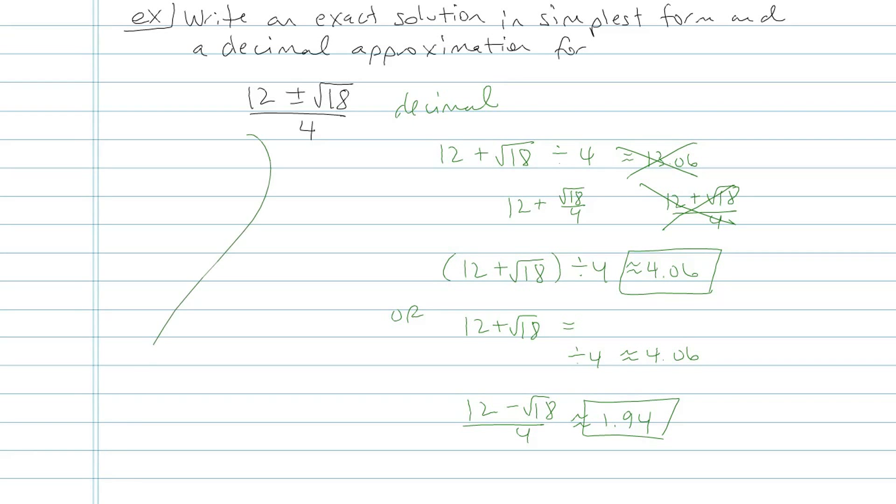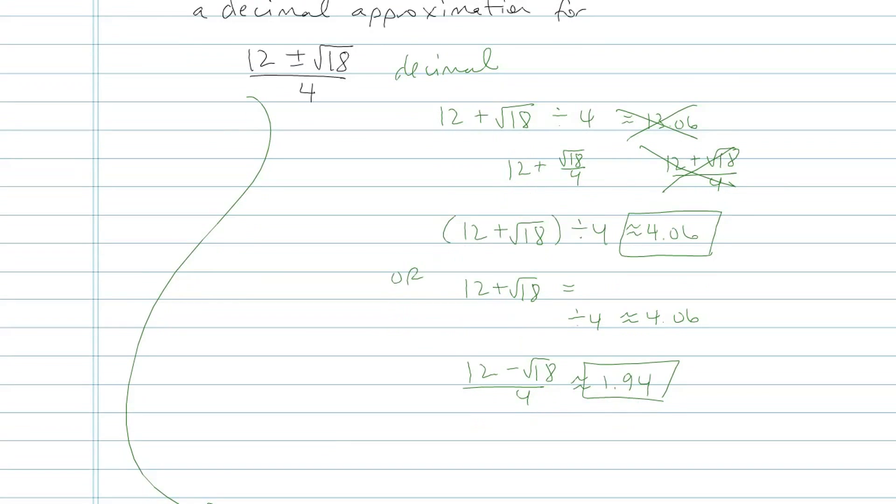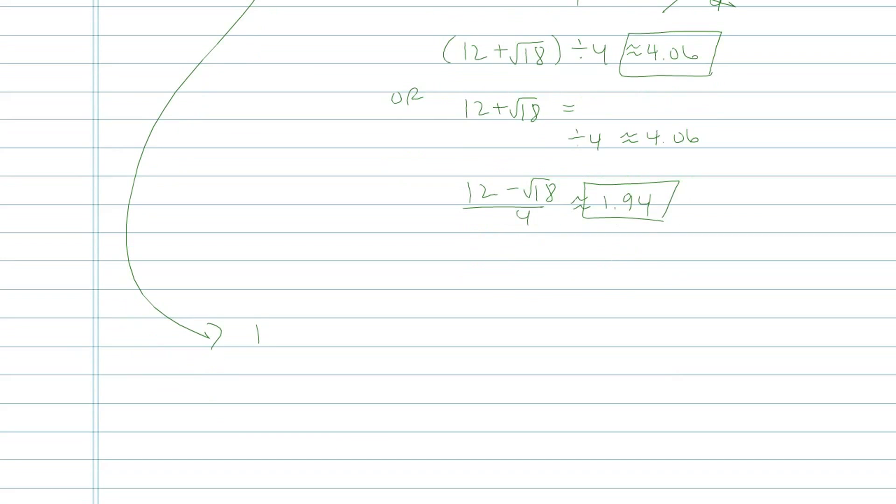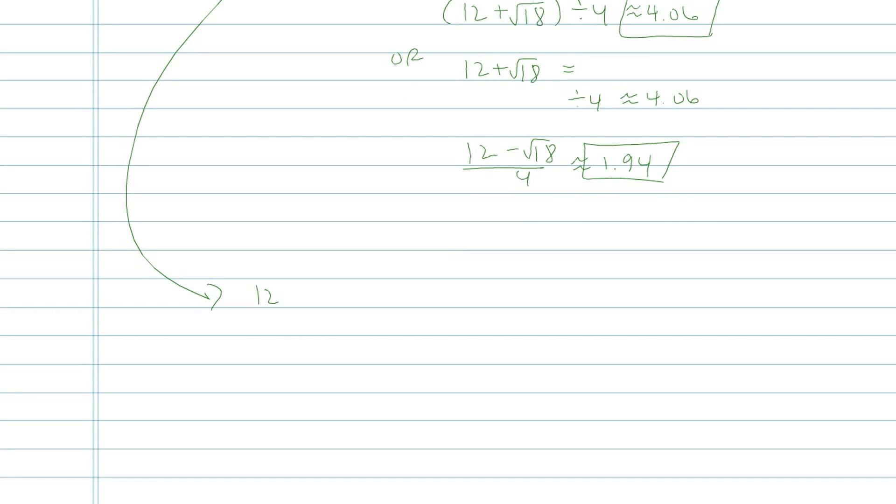I didn't simplify it at all. Let's go ahead and do an exact answer, which is where I simplify the radical. So what I would do is think about square root of 18, and instead of square root of 18, I want to use a product of numbers where one of them has a perfect square.